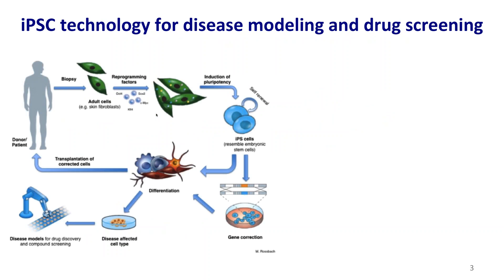Just to refresh your mind on iPSC technology: as I mentioned, you can start from a healthy donor or a patient, obtain a somatic cell — a skin cell, blood cell, or other — and use reprogramming factors to reprogram it into pluripotent stem cells. At this stage, the iPSC cells can be genome-edited using novel technologies such as CRISPR and zinc-finger nucleases, which we will discuss later.